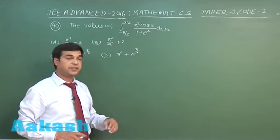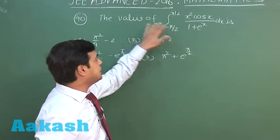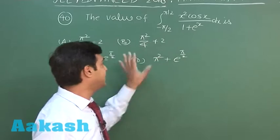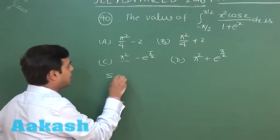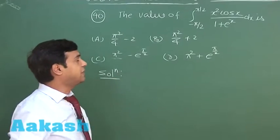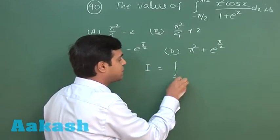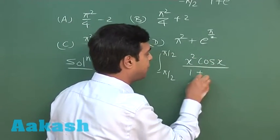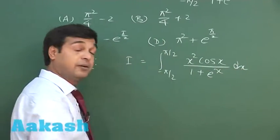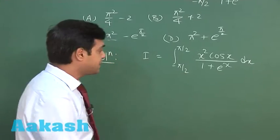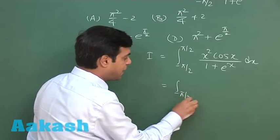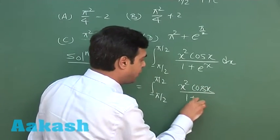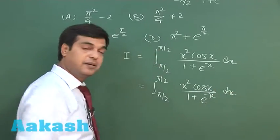Let's take question number 40: the value of the integral from −π/2 to π/2 of x²cos(x)/(1 + e^x) dx. Let I = ∫ from −π/2 to π/2 of x²cos(x)/(1 + e^x) dx. Applying the property using (a + b − x), we get I = ∫ from −π/2 to π/2 of x²cos(x)/(1 + e^(−x)) dx.